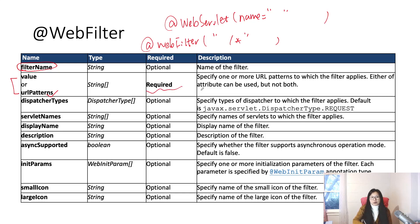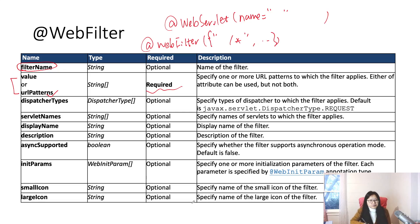If you only have a URL pattern, you don't need to specify the attribute value explicitly. By default it's assigned to value. You can also use urlPattern — they are aliases to each other, and only one of them is required. You can specify one or more URL patterns to which the filter applies.